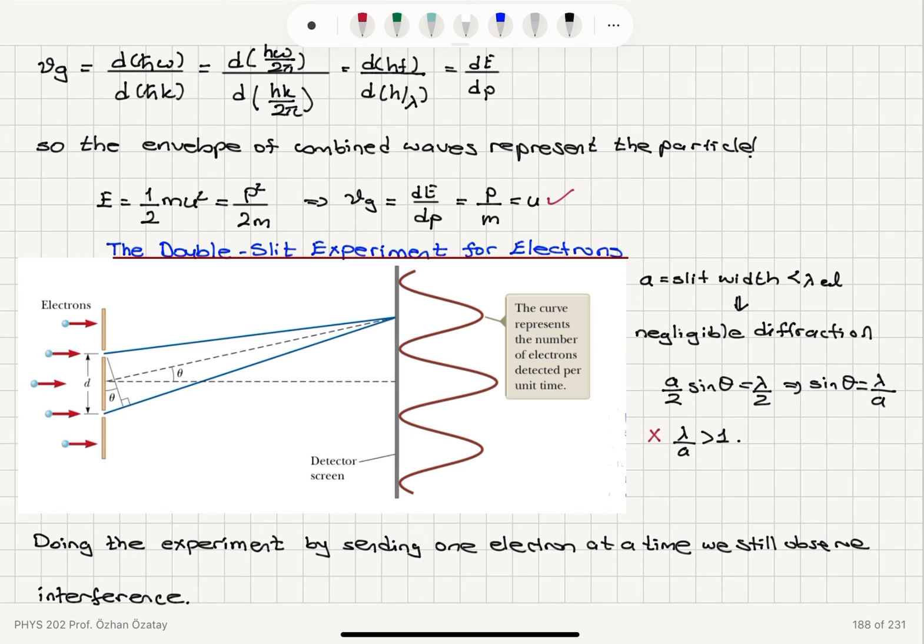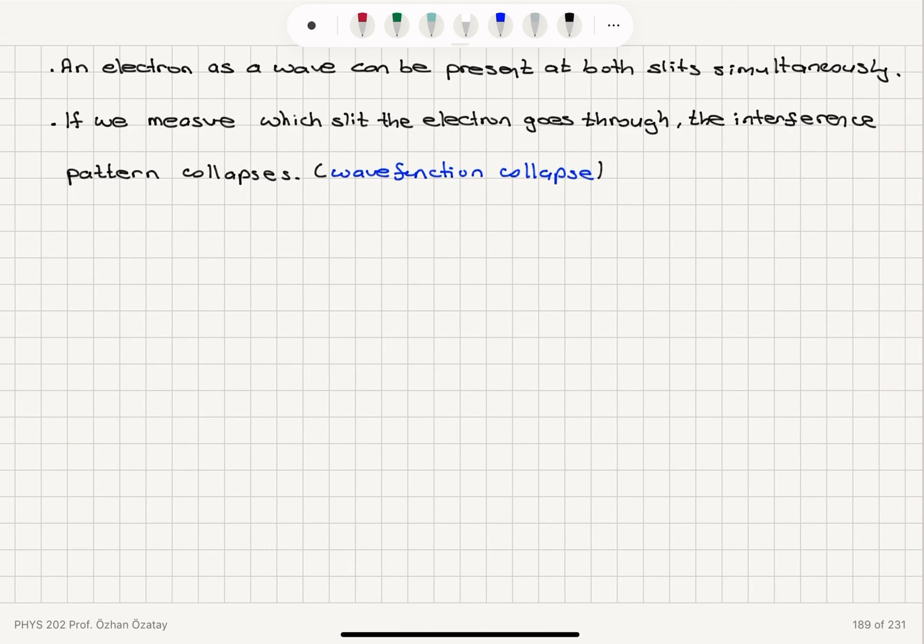When we perform the double slit experiment for electrons, if we have one electron going through, approaching the set of slits, we see an interference pattern on the screen. However, if we measure through which slit the electron goes through, we observe what is called wave function collapse. The interference pattern collapses.